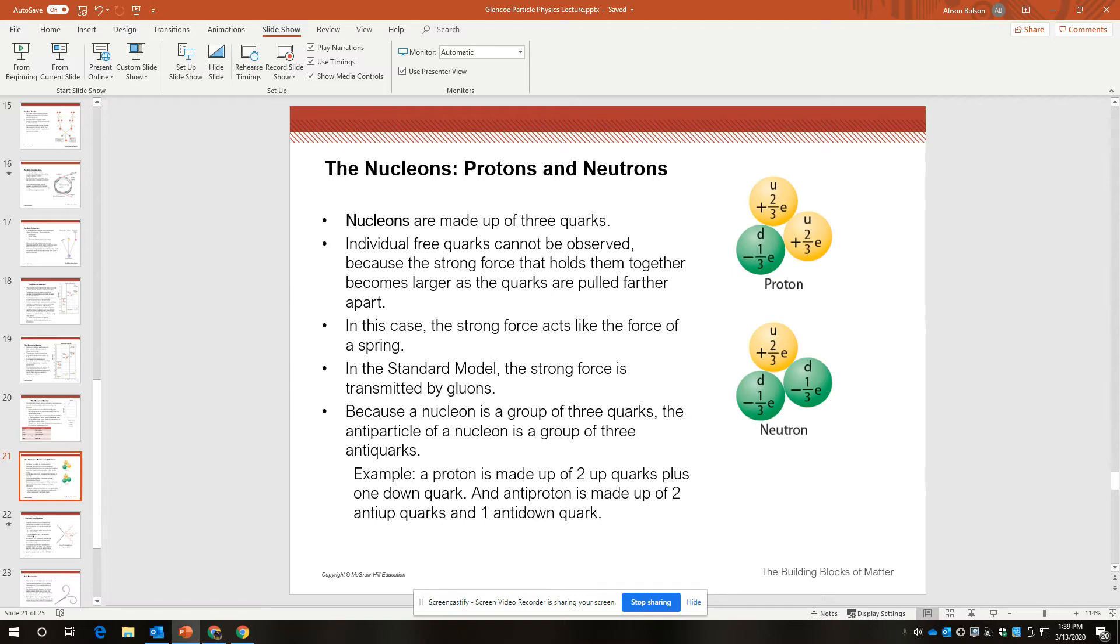As I've said a few times, the proton is made up of two up quarks and one down quark. Two positive two-thirds up quarks and one negative one-third down quark. And the neutron is made up of one positive two-thirds up quark and two negative one-third down quarks.